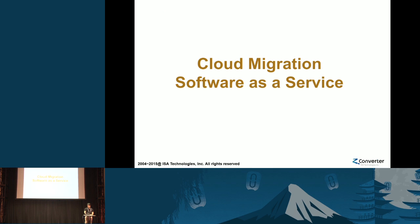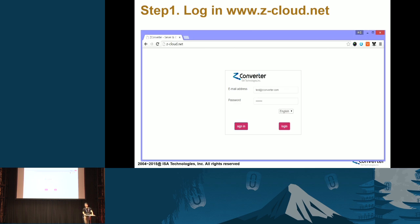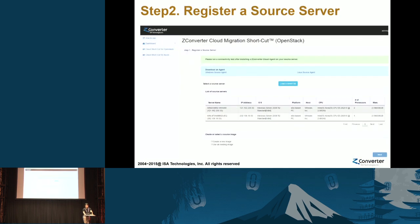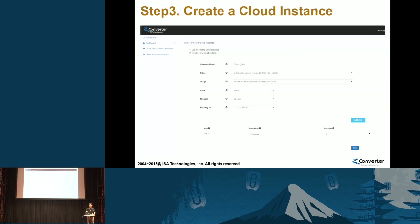This is the cloud migration software as a service model. It's very simple. If you want to migrate your on-premises to the OpenStack cloud, please access www.gcloud.net. The first step is to log in. The second step is to register your source machine — just download the agent file to your source machine, and our cloud migration website will identify your source machine. You can create your new cloud instances directly from our website without going to the OpenStack cloud.